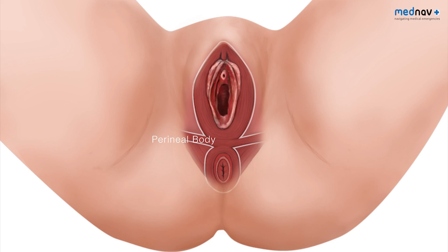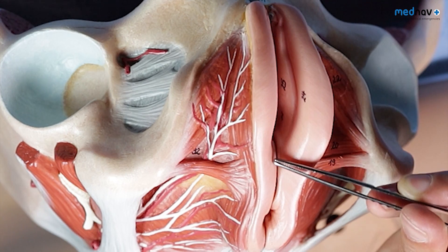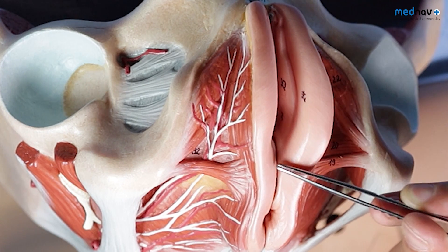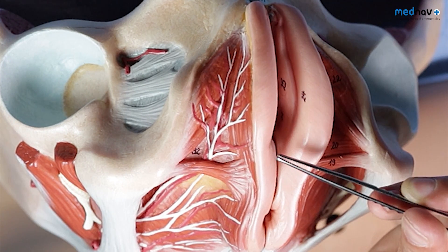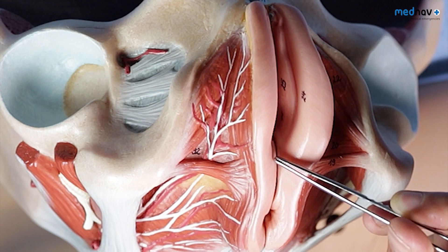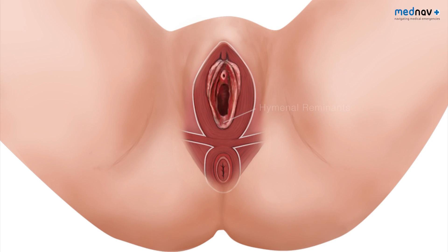The normal perineal body should measure 2.5 centimetres from the middle of the anal opening to the posterior fourchette. Just by the posterior fourchette are the hymenal remnants. These are useful landmarks for when you perform your perineal repair.